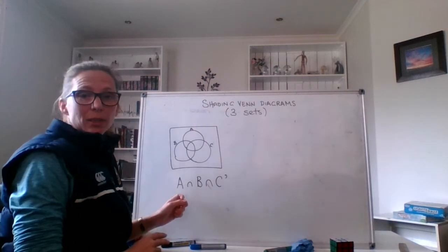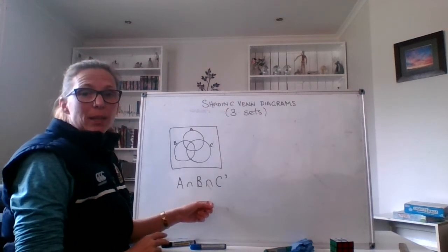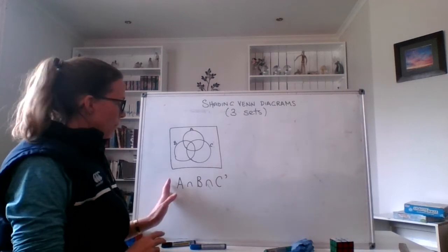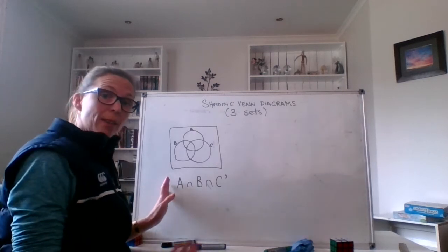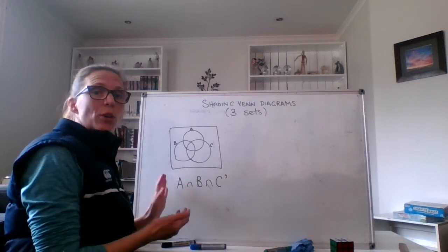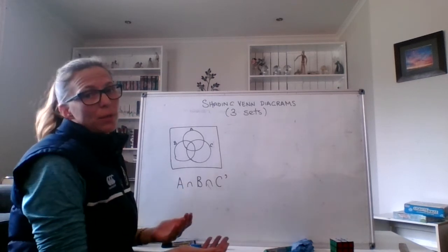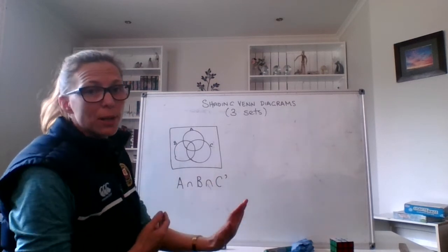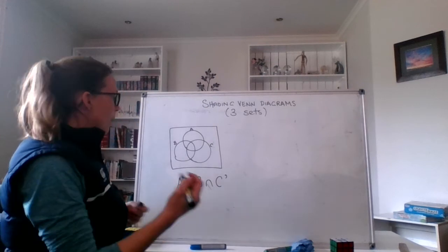I'm going to start with this one that says A intersect B intersect not C. Sometimes you'll encounter these with brackets, in which case you do whatever's in the brackets first and then move over to the next bit. If not, you just work from left to right.